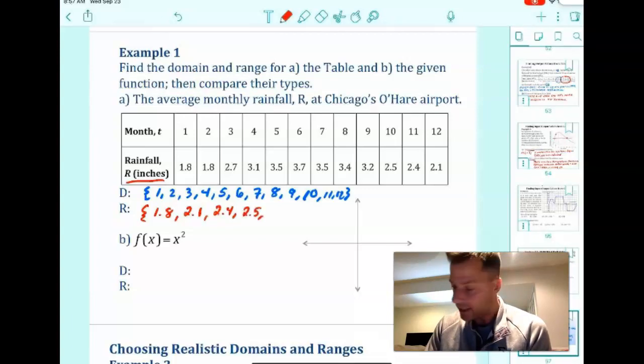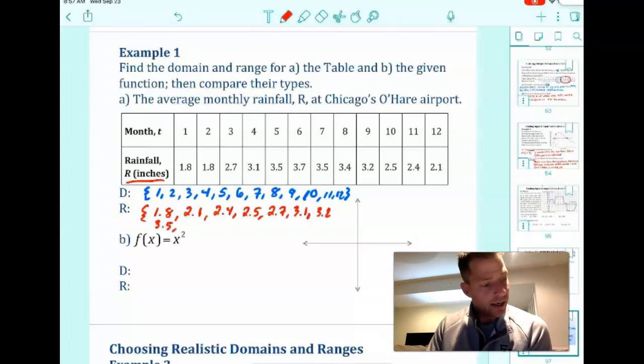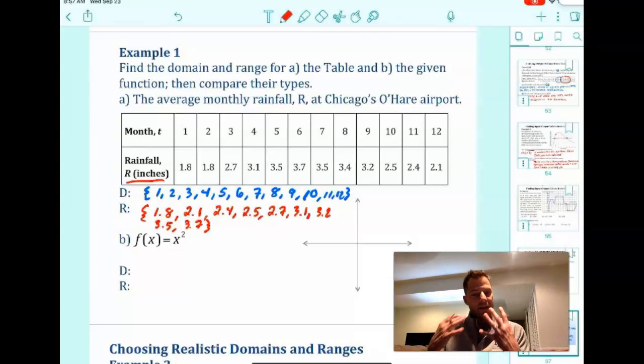2.5, 2.7, 3.1, 3.2, 3.5, 3.7. So not a lot of space there to write that. I apologize. I wanted to save some room for my graph. So there's all the domain and range from a table of values.